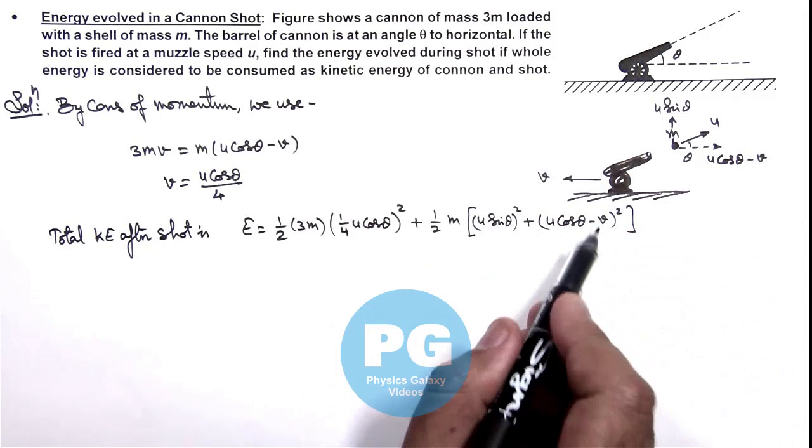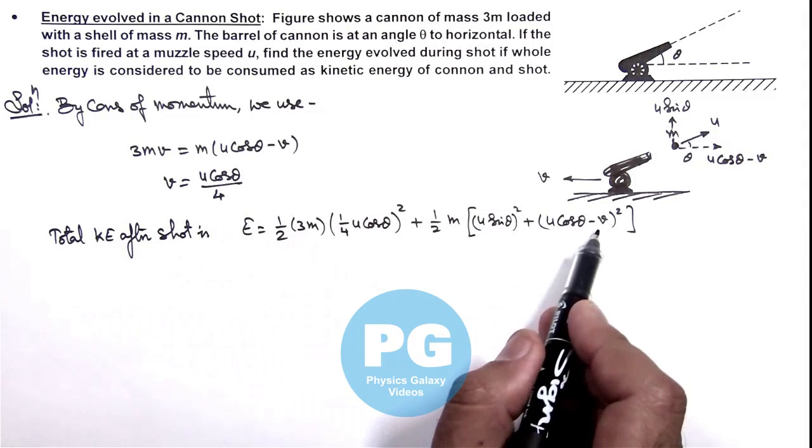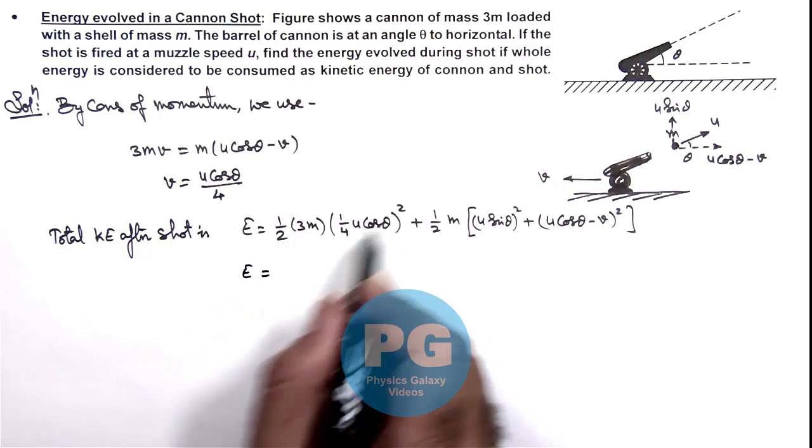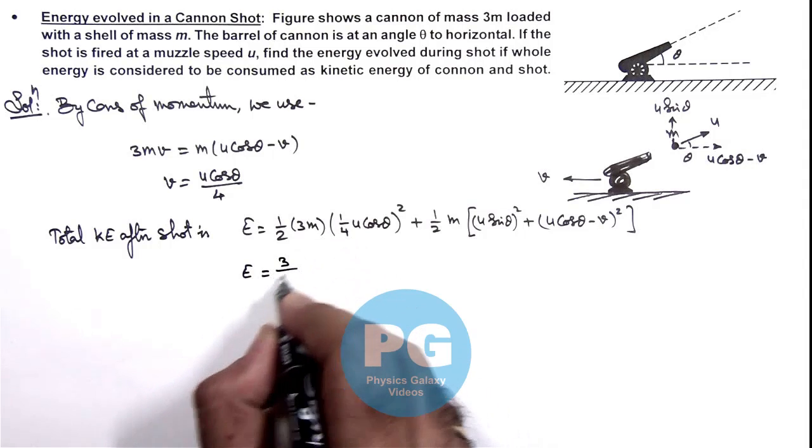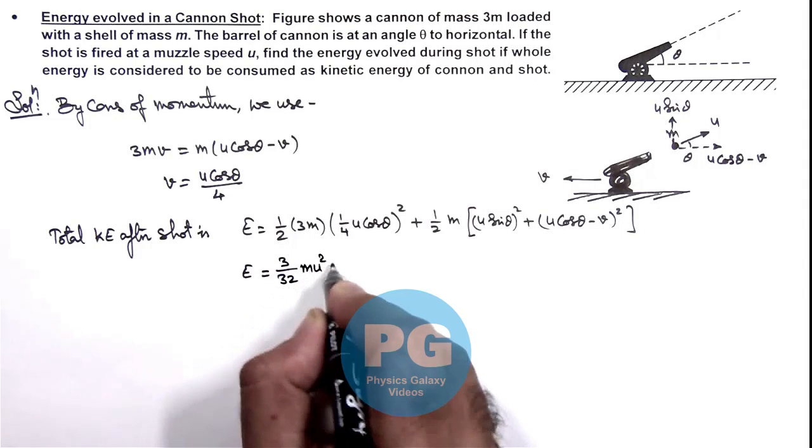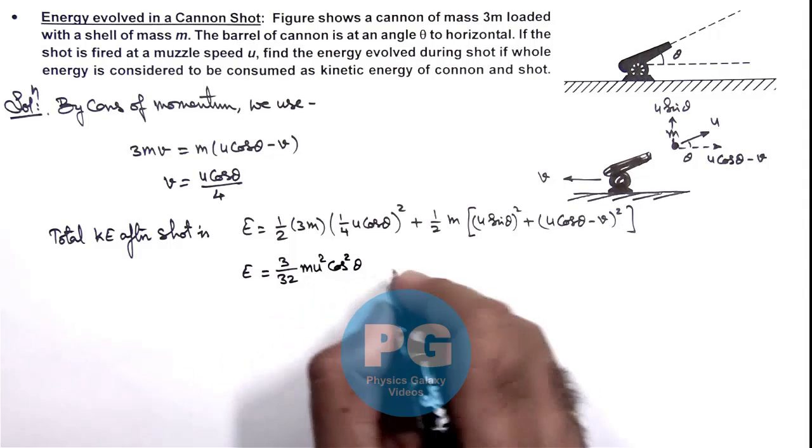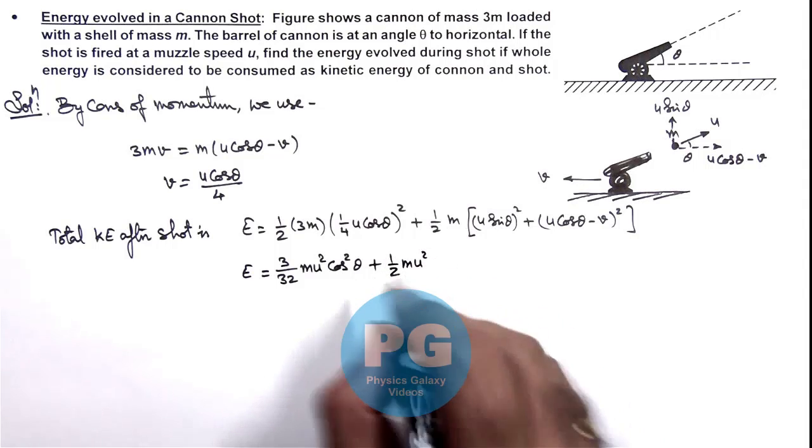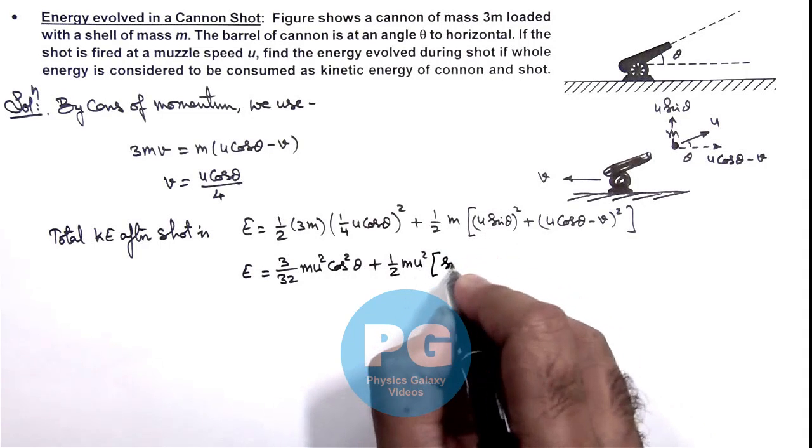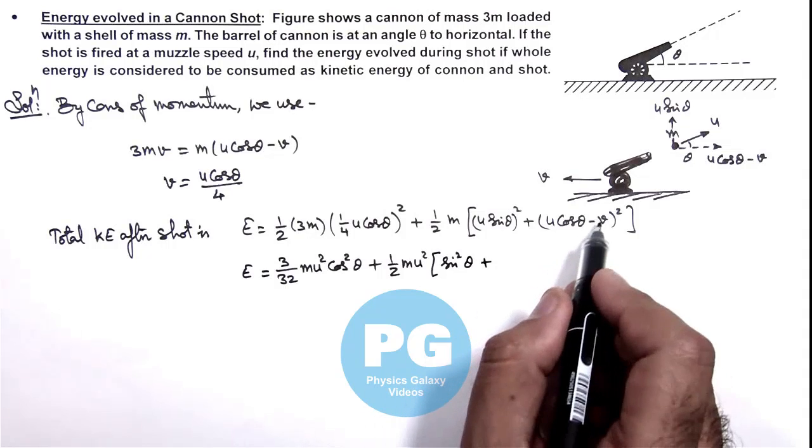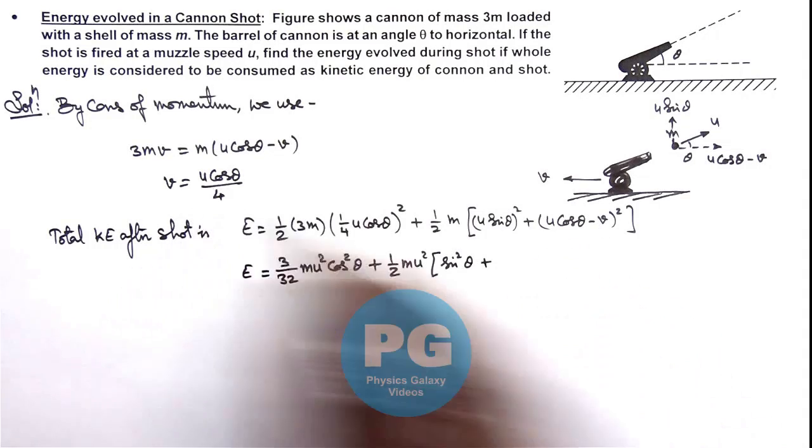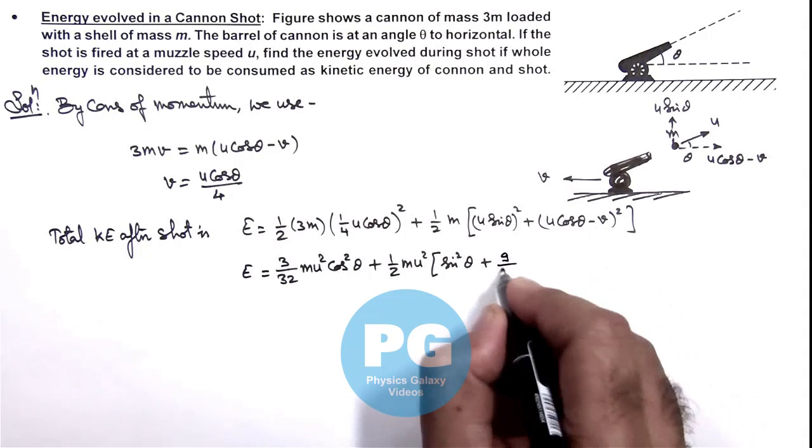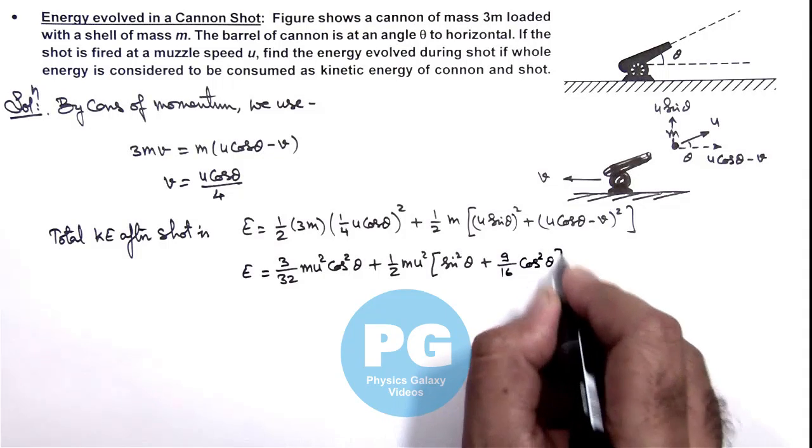Here we can substitute the value of v which is u cos theta by 4. So on simplifying this gives us E is equal to, if we square this term, this will give us 3 by 32 m u square cos square theta, plus here it will be half m u square. And this term will become sine square theta plus, if we substitute the value of v as 1 by 4 u cos theta, this will be 3 by 4 u cos theta, so this will be 9 by 16 cos square theta.